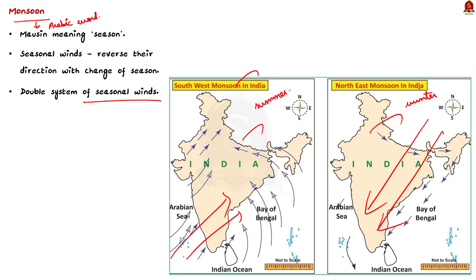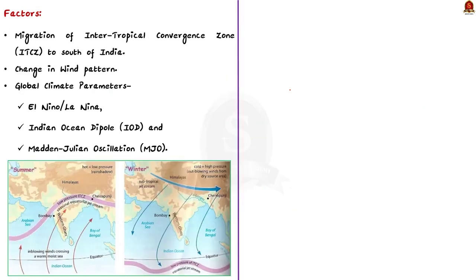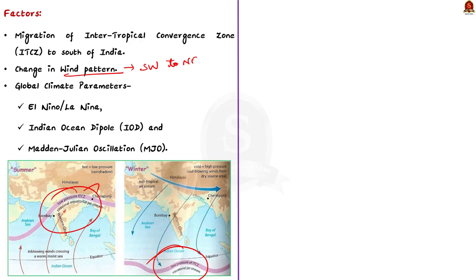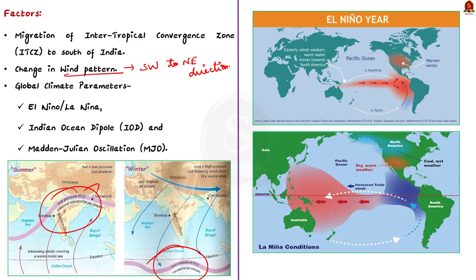The factors responsible for northeast monsoon formation are: first, the migration of the Intertropical Convergence Zone to the south of India; second, the change in wind pattern — during mid-October, the southwest monsoon withdraws completely and the wind pattern rapidly changes from south-westerly to north-easterly direction; and third, global climate parameters like El Niño, La Niña, and Indian Ocean Dipole, which also influence the intensity of the northeast monsoon.